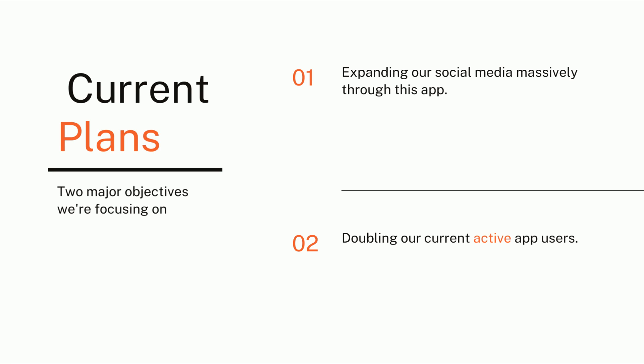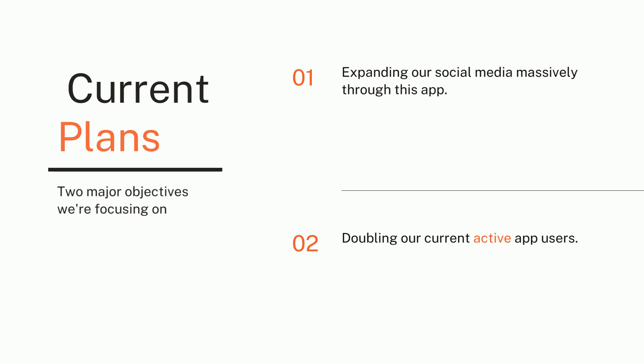When we thought about TikTok, we focused on two plans at the beginning. The first major objective was expanding our social media massively through this app, sharing all content — videos, producer stories, and products — to our TikTok application and network. The second plan was doubling our current active app users in social media as we moved into TikTok.